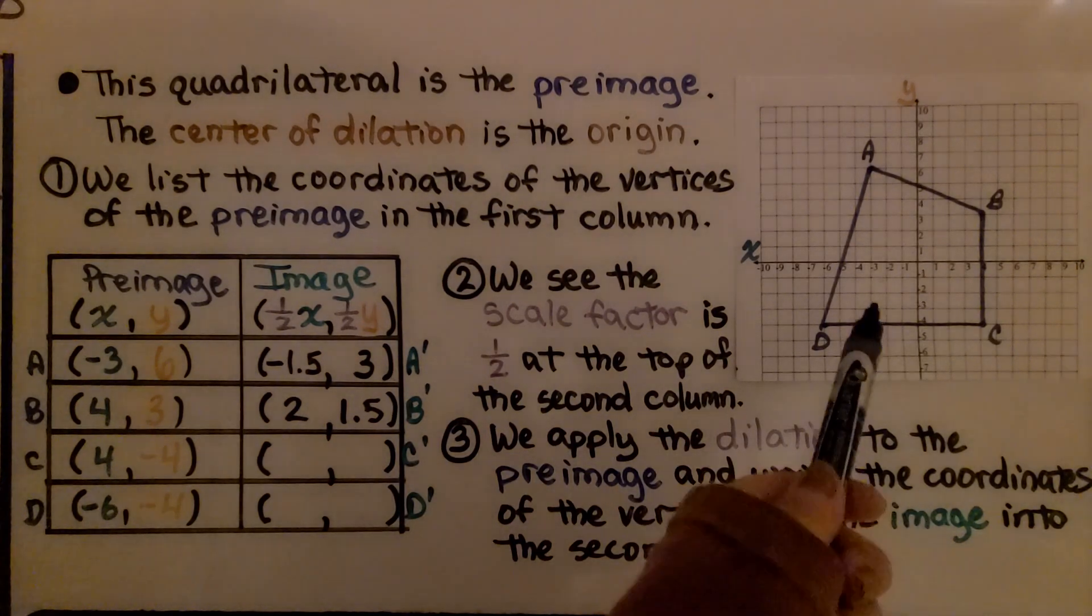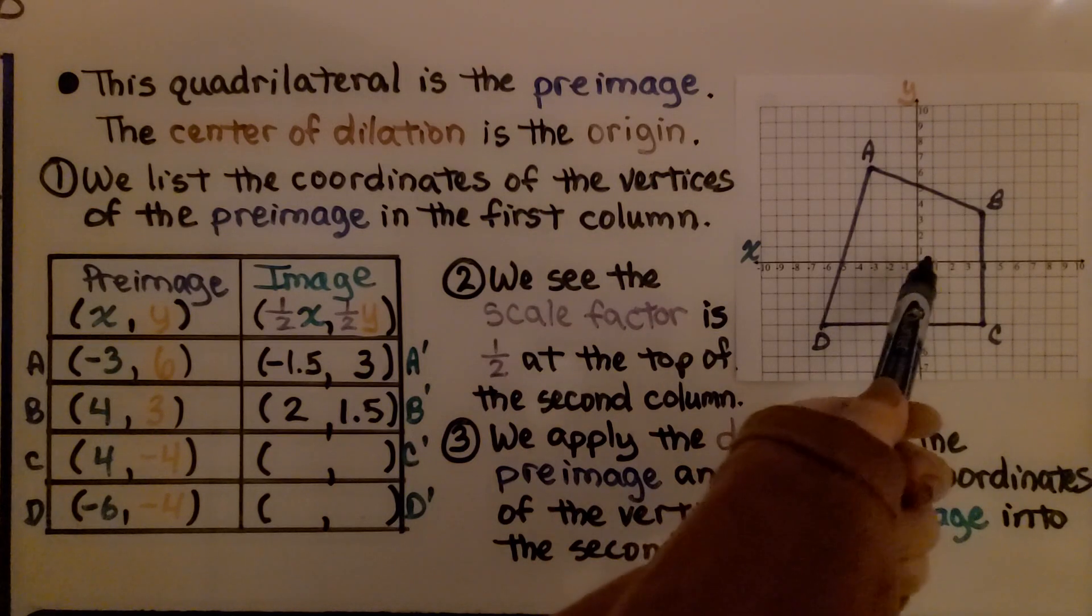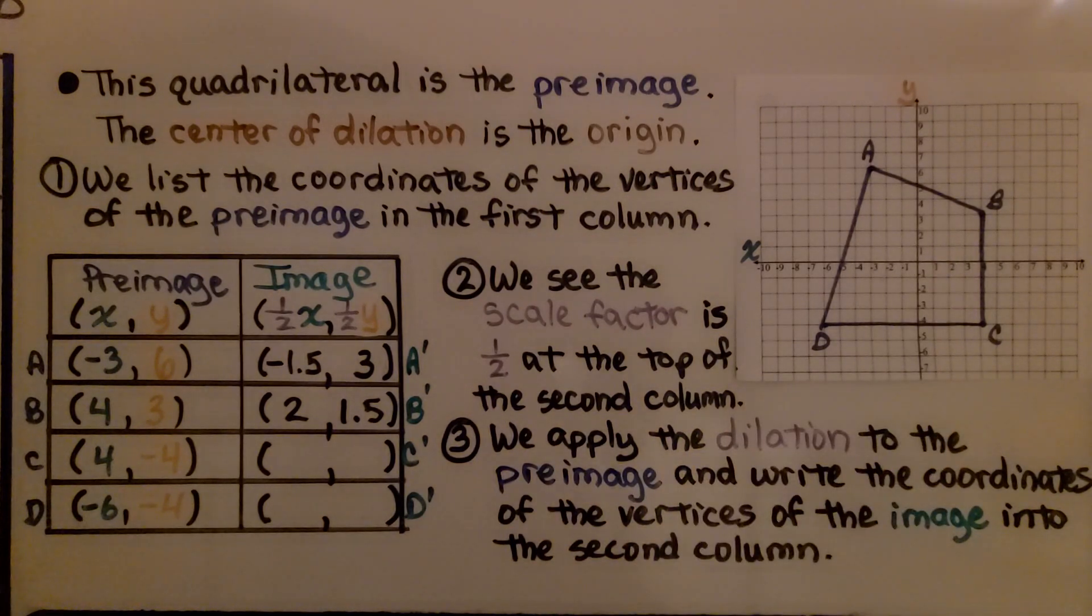This quadrilateral is the preimage and the center of dilation is the origin. We list the coordinates of the vertices of the preimage in this first column. So we have A, B, C, and D.